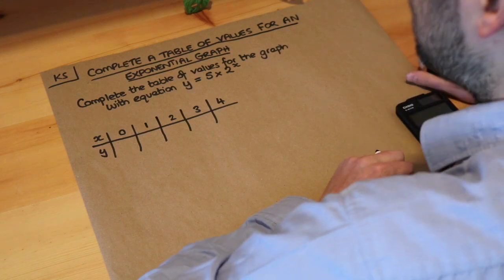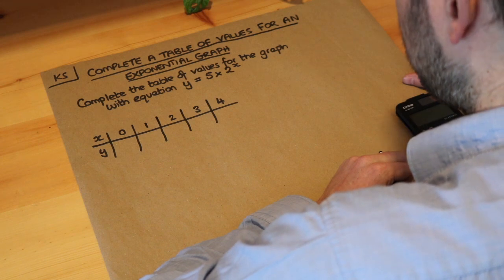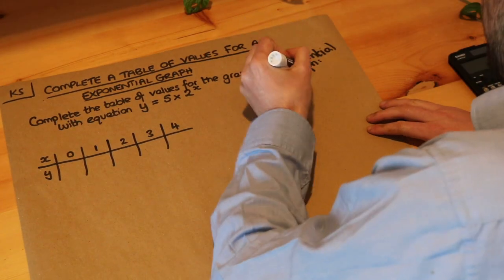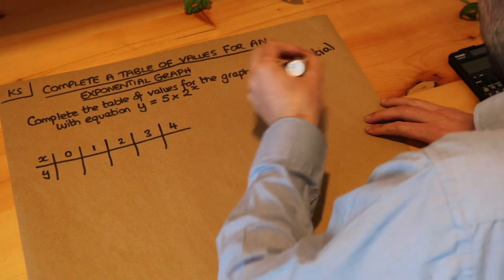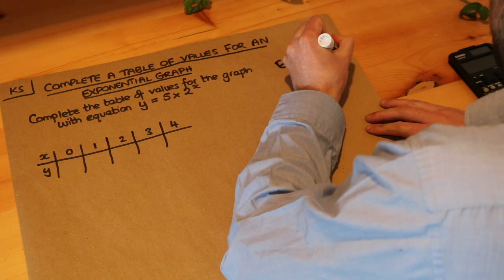Hello and welcome to this Dr. Osama's key skill video on completing a table of values for an exponential graph. Now in general, an exponential graph has equation y is equal to some constant, so some number times another number to the power of x.